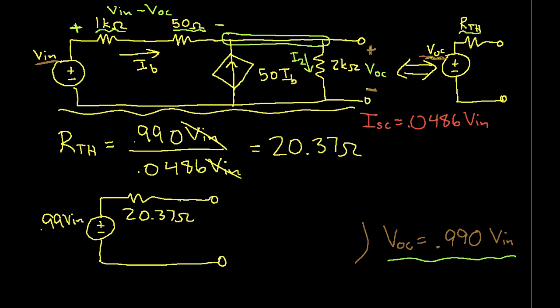A final comment. To find the Thevenin equivalent resistance, RTH, we might try to zero out the VN source, that is the independent source, and find the equivalent resistance of the circuit. But we can't do that because of the dependent source.